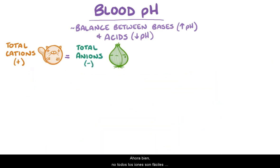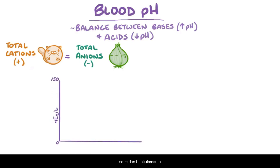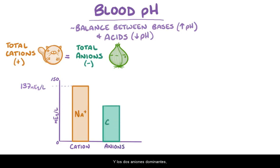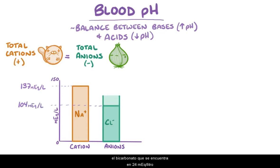Not all of the ions are easy or convenient to measure, so typically only three get measured. The dominant cation, sodium or Na+, which is typically around 137 milliequivalents per liter, and the two dominant anions, chloride or Cl-, which is about 104 milliequivalents per liter, and bicarbonate, which is around 24 milliequivalents per liter.